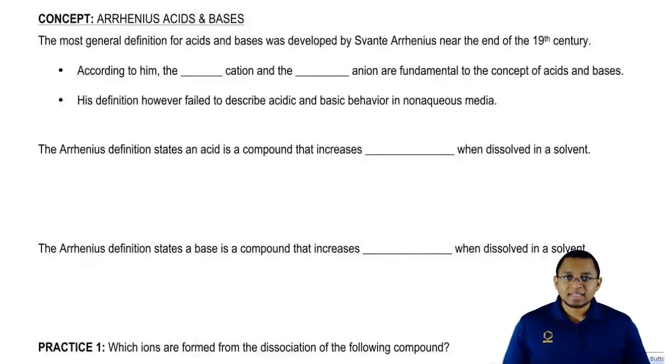We know that there are two types of acids: binary acids and oxy acids. We know how to identify bases. Just realize that there are going to be three types of categories for acids and bases.